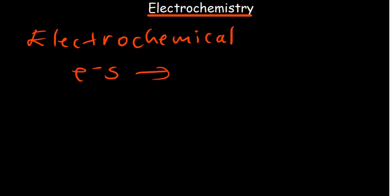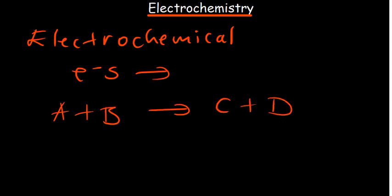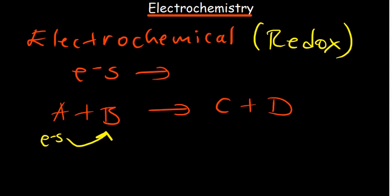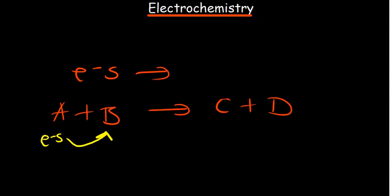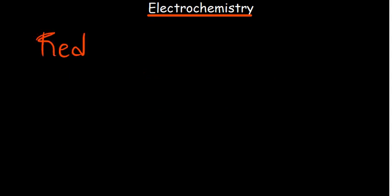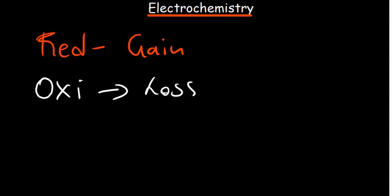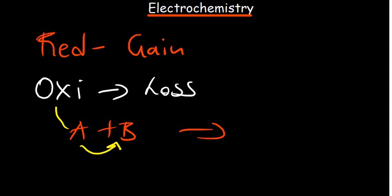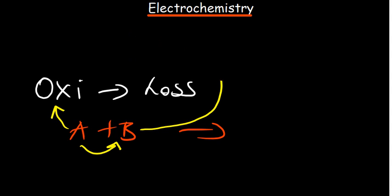For example, in a reaction where A reacts with B to give C and D, if electrons are being transferred from A to B, that is an electrochemical reaction — also called a redox reaction, involving oxidation and reduction. Reduction is the gain of electrons; oxidation is the loss of electrons. These are called half reactions.